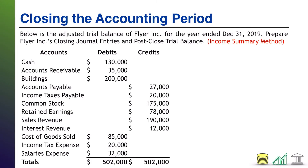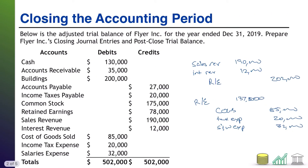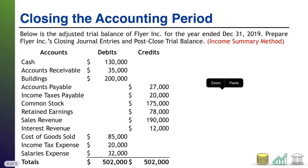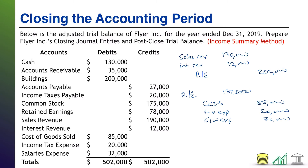Now, same problem but using the income summary approach — for those required to know that for an introductory course. The income summary approach is essentially the same thing. Instead of closing directly to retained earnings, we close to income summary. It's the exact same process — we're just not dumping it straight into retained earnings, we're dumping it into income summary. But this creates an extra step: ultimately, we then have to close income summary to retained earnings.